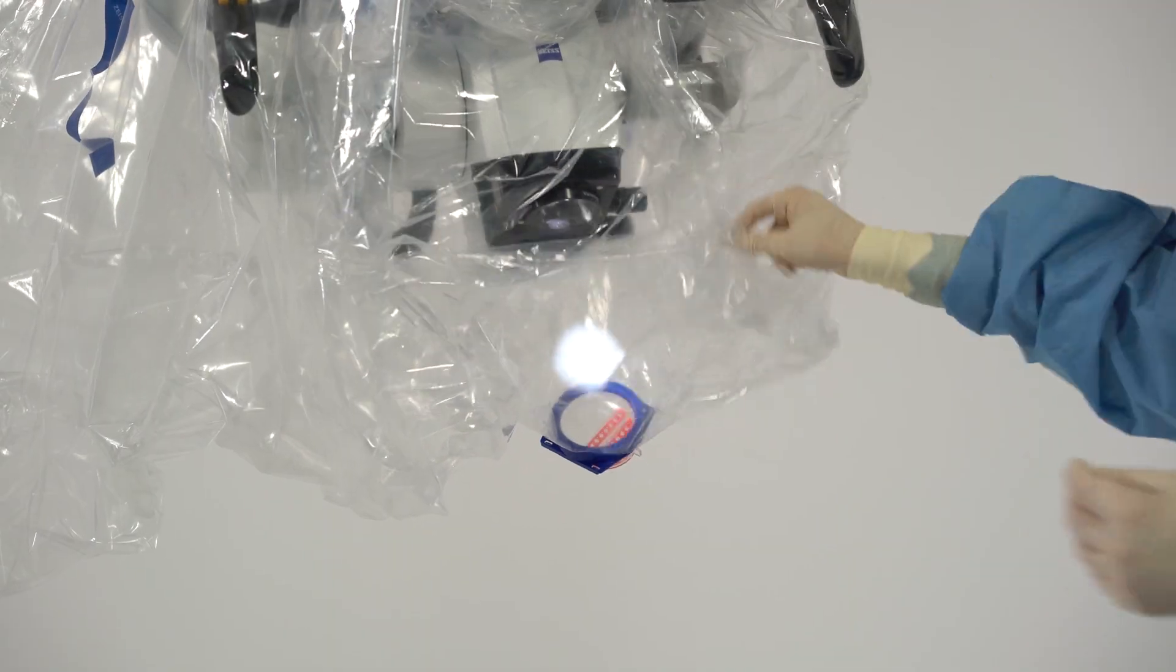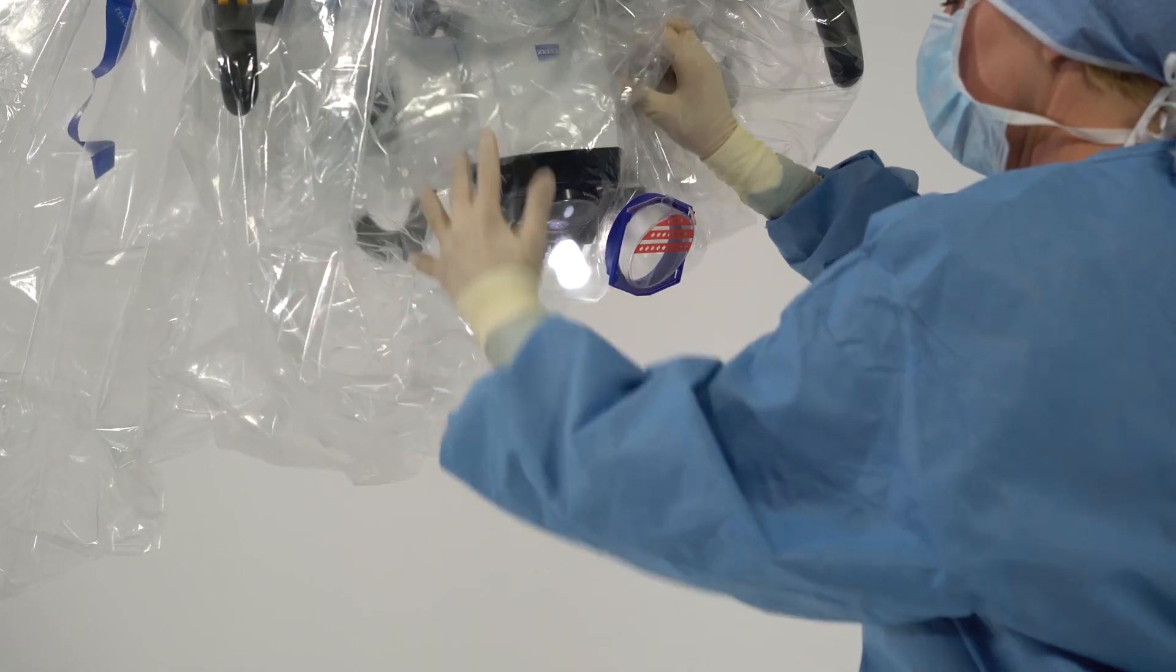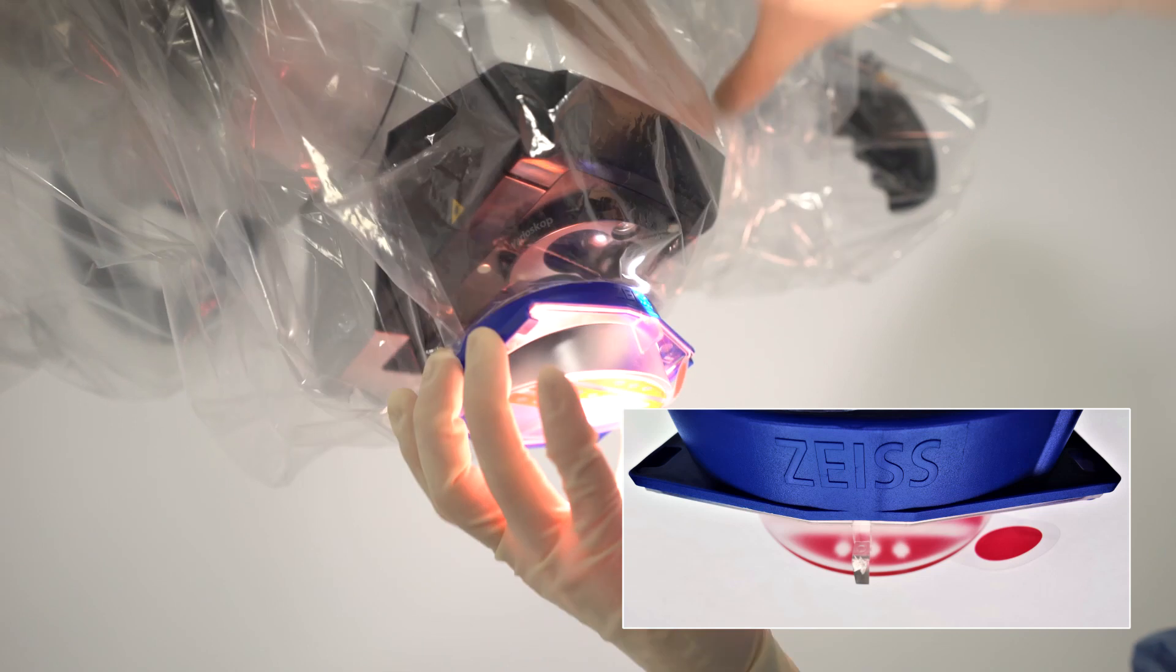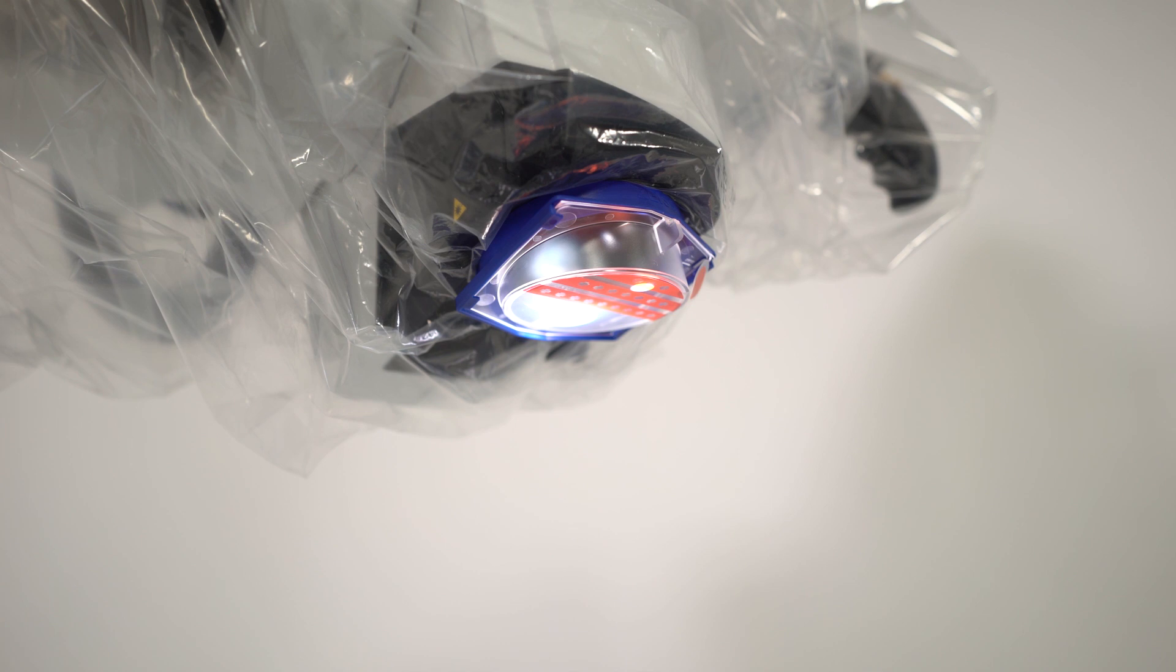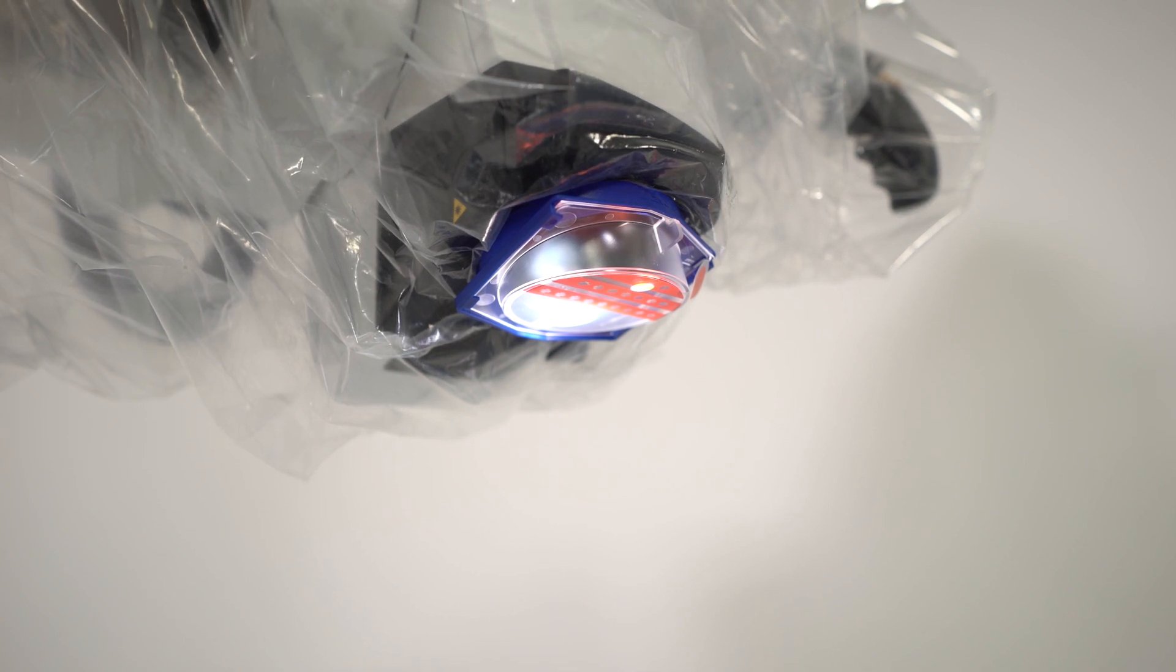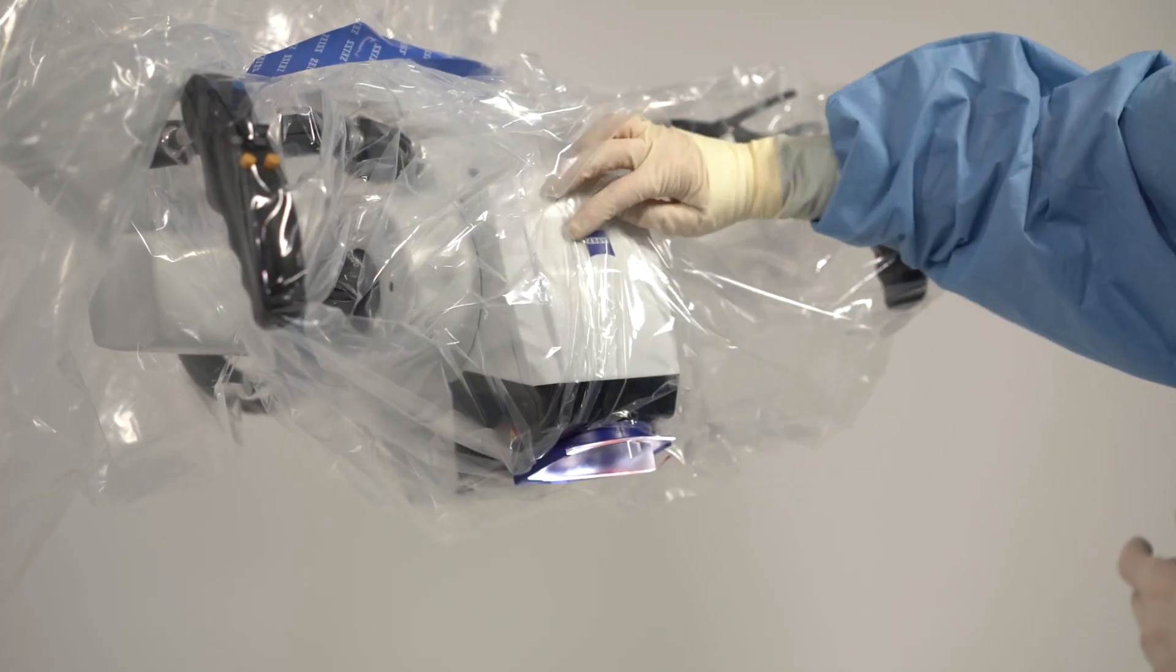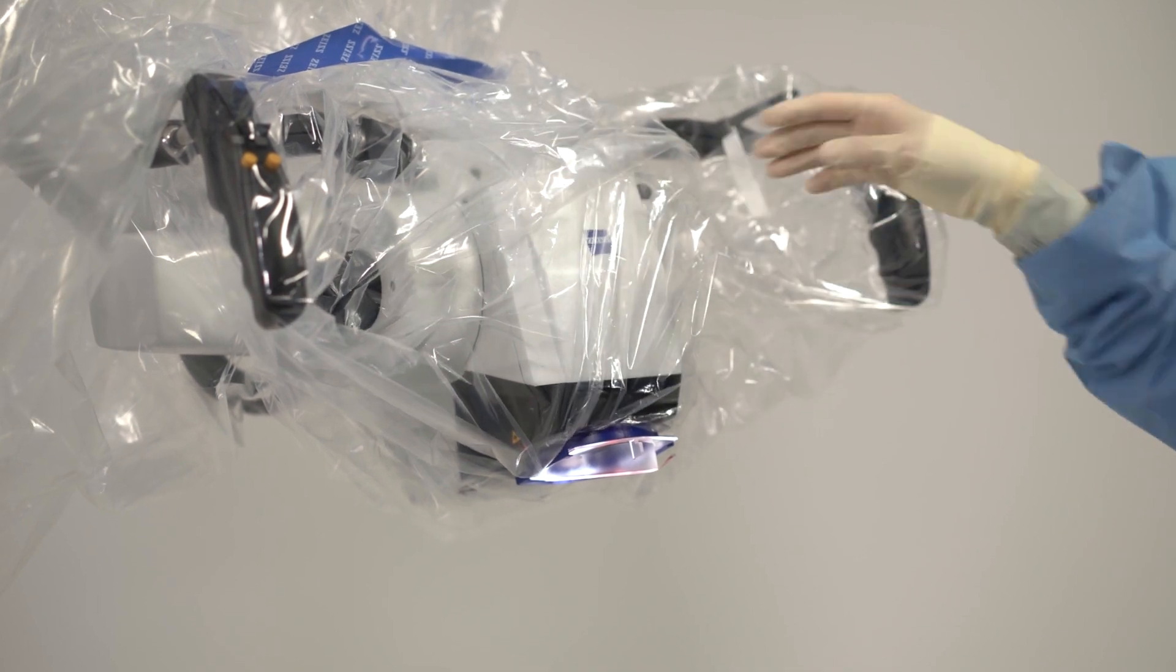Hold the Vision Guard lens of Zeiss Smart Drape such that the Zeiss Text faces you. Move Vision Guard under the lens. It will snap into the right position automatically with support of the Vision Guard magnets. Make sure there is no foil between the blue ring and the device.